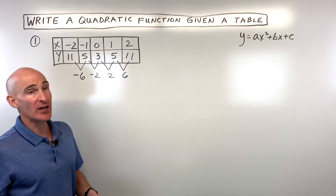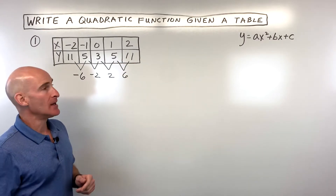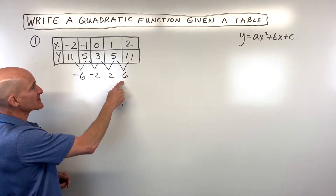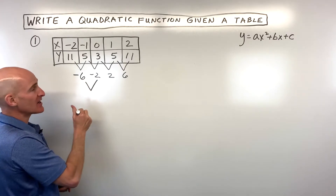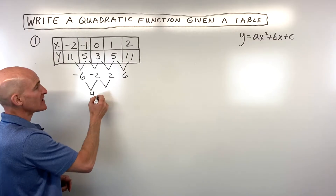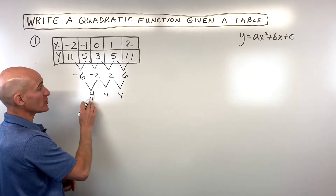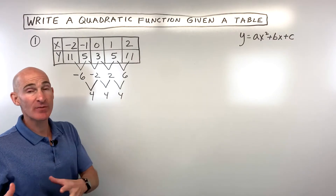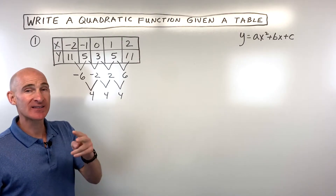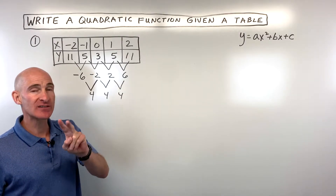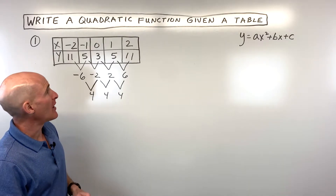If this was a linear equation, these would all be the same number — it would be going up at a constant rate. But in this case it wasn't constant. Let's subtract again: negative 2 minus negative 6 is 4, 2 minus negative 2 is 4, and 6 minus 2 is 4. We're getting the same number, and that second-order difference tells us this is a second-degree polynomial — a quadratic.